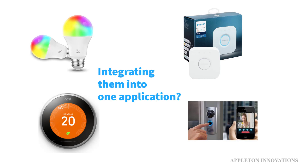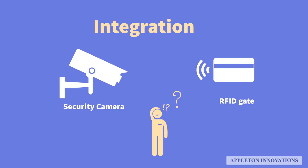Each company provides one web application or Android application, so now you have four different applications. You want these IoT devices to work together. Take a simple case: a shop manager wanting to combine their security cameras with RFID gates so that they can create a more secure system. The solution for solving this problem is Web of Things.